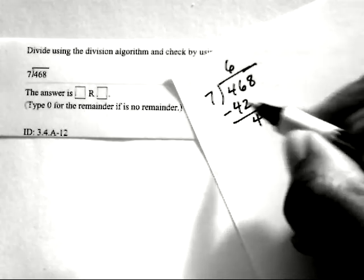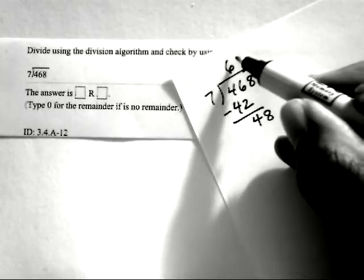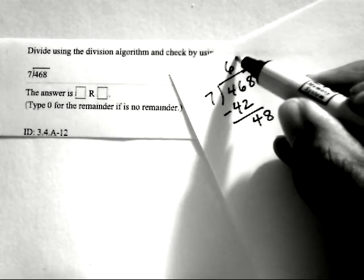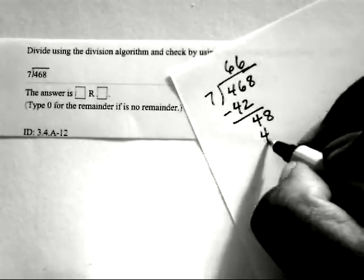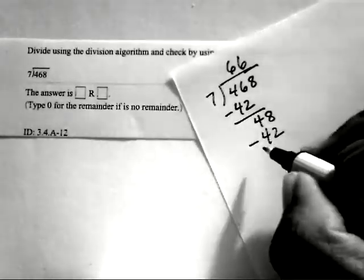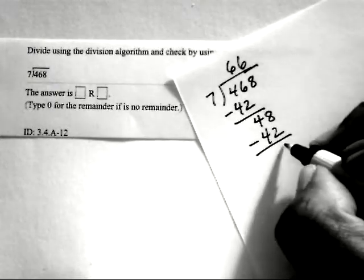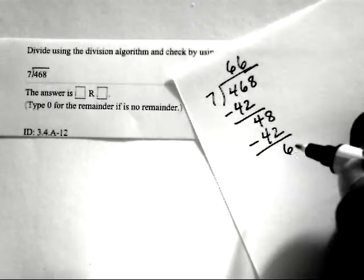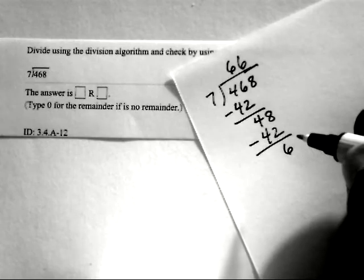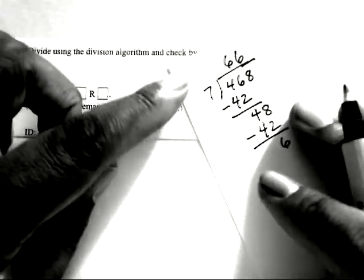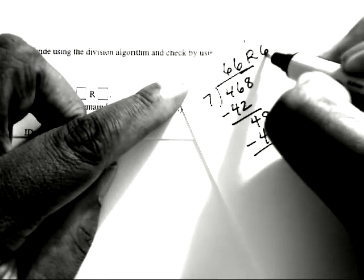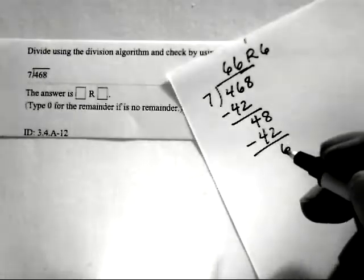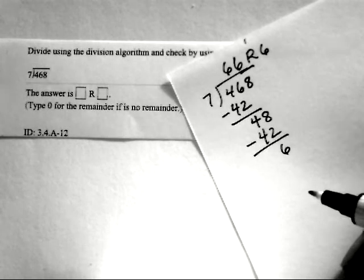And then divide 7 into 48, which will go 6 times again. Then 6 times 7 will be 42. Subtract 42 from 48, you're going to get 6. Now, can 7 go into 6? No, it can't. So that means this 6 will represent your remainder. The 66 is your quotient. So the quotient and the remainder will be 66 remainder 6.